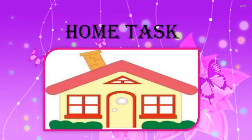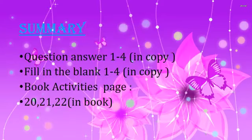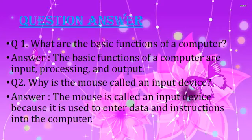Now it's time for the Home Task. Dear students, after maintaining Title, Page and Index, you have to write the Heading of Summary with blue color on the Heading Line. In the summary of this chapter, Question Answers 1 to 4 and Fill in the Blanks 1 to 4 are to be done in your copy. Book Activities on Pages 20, 21 and 22 are to be done in your book. After the summary, write Question Answers on the Heading Line with blue color.